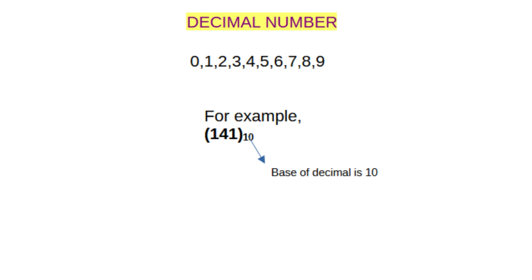The next one is decimal number. We represent decimal numbers using digits 0, 1, 2, 3, 4, 5, 6, 7, 8, and 9. The base or radix of decimal number is 10.